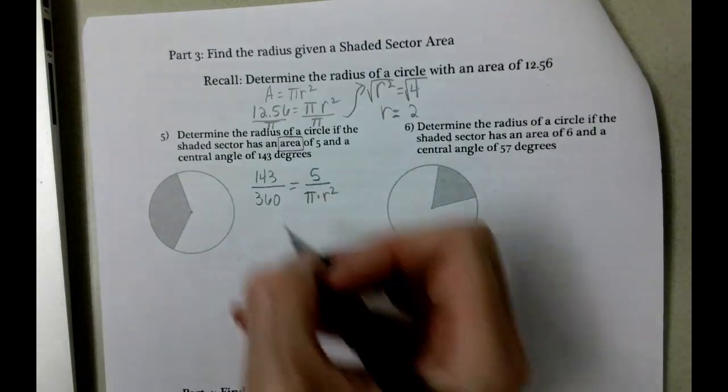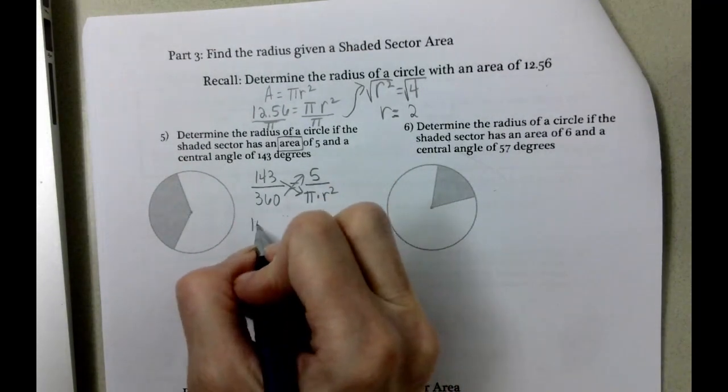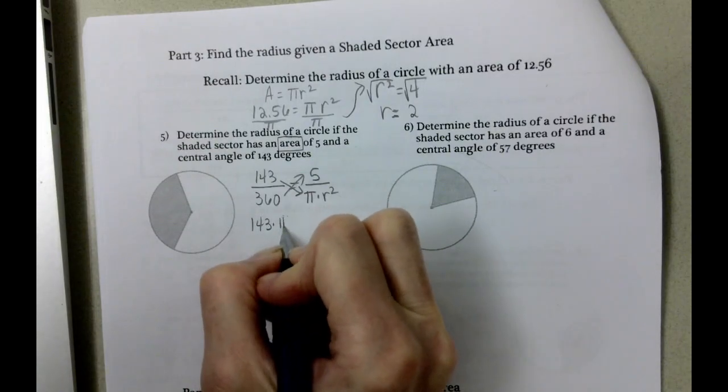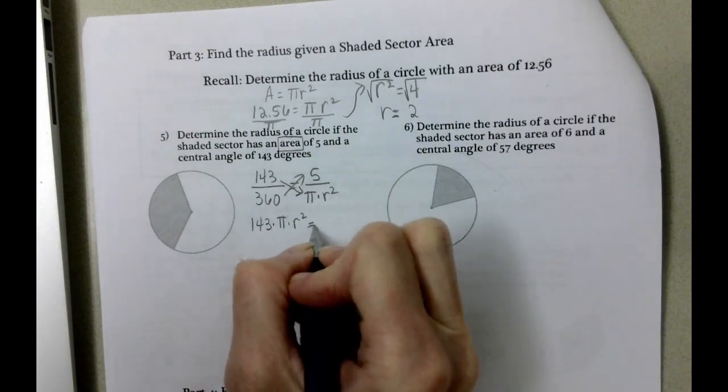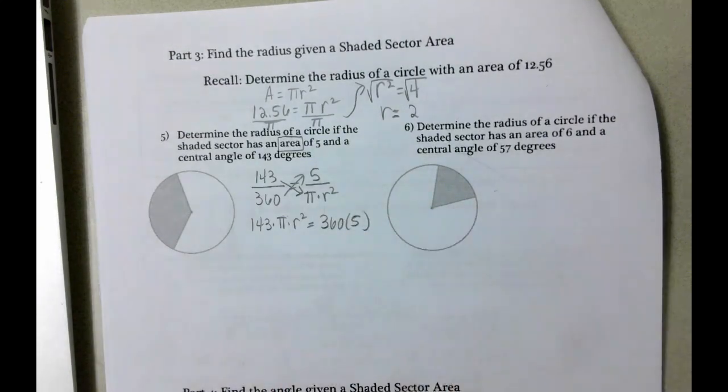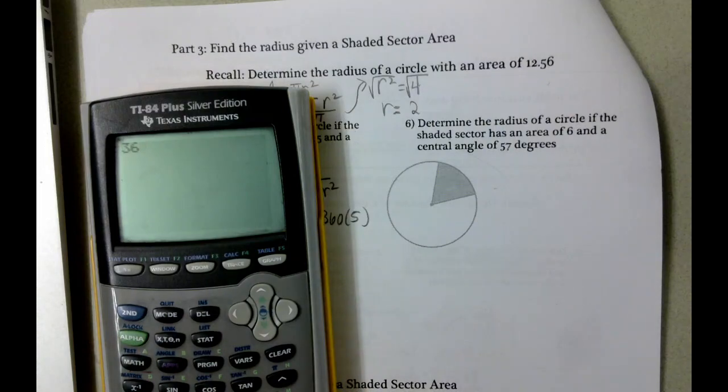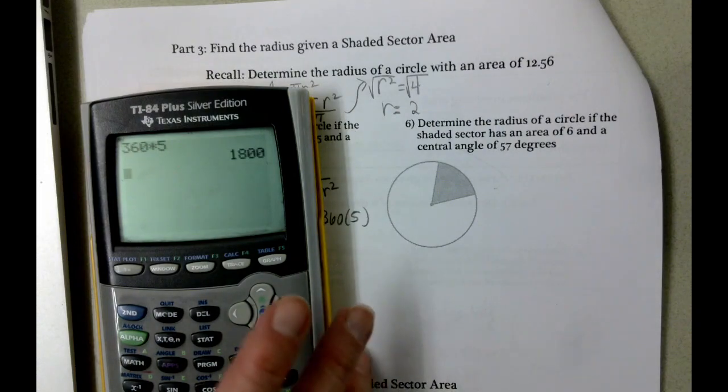So what we're going to do is cross multiply. This is going to be 143 times pi times radius squared equals 360 times 5. We can do the 360 times 5 easiest. That's going to give us 1800.